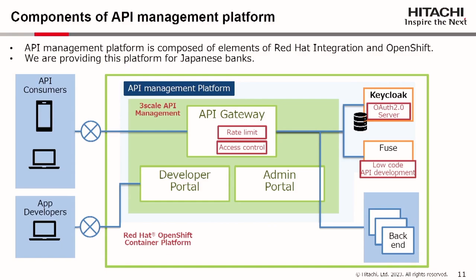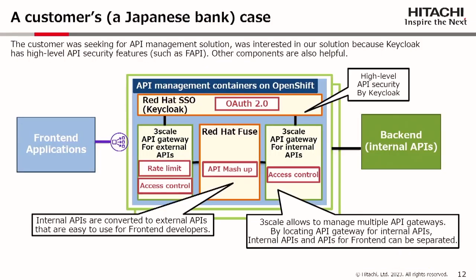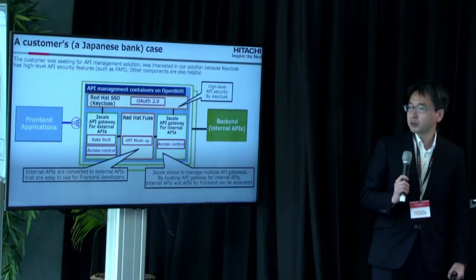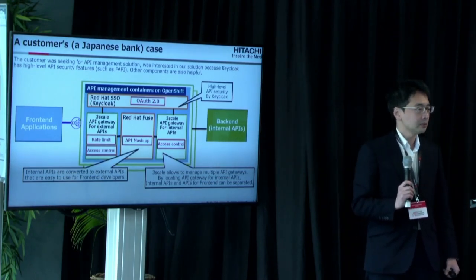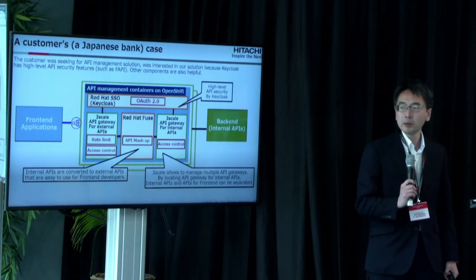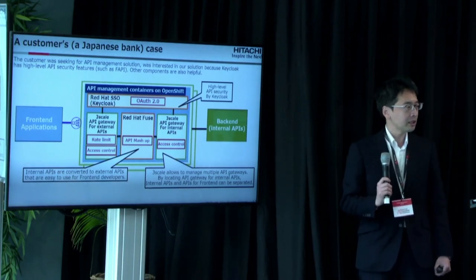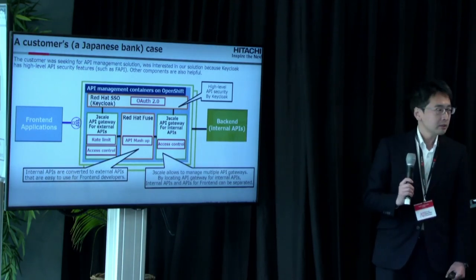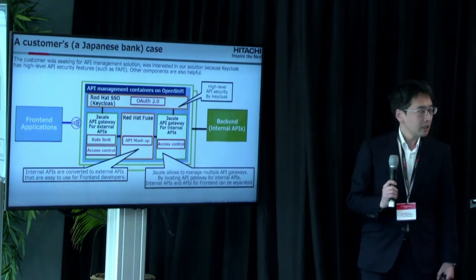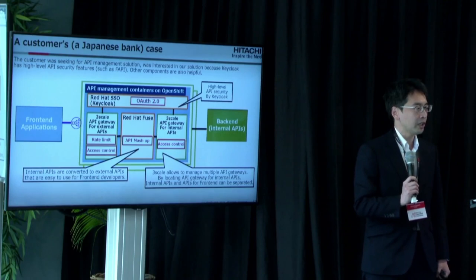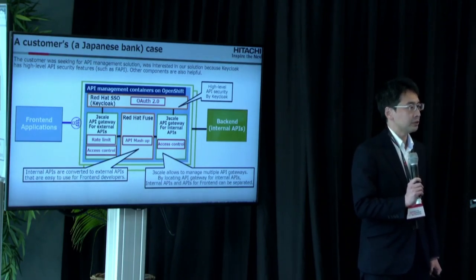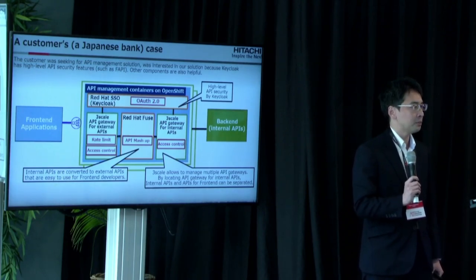Keycloak is also deployed as the authorization server. More than 10 banks are using our platform. This is a customer case — a Japanese bank's case. The customer was seeking an API management solution and was interested in our solution because Keycloak has high-level API security features, and also the other components are useful.